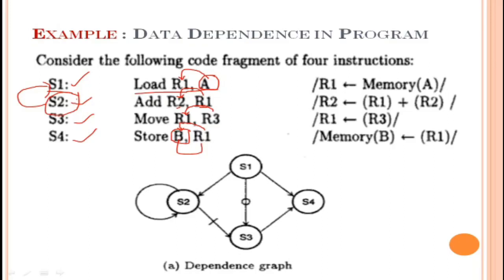Hence S2 is flow dependent on S1. S3 is anti-dependent on S2 because of potential conflicts in the register R1 — R1 is used in both statements. Hence S3 is anti-dependent on S2. The statements S1 and S4 are independent; they are not dependent on any other statements and are called independent statements.